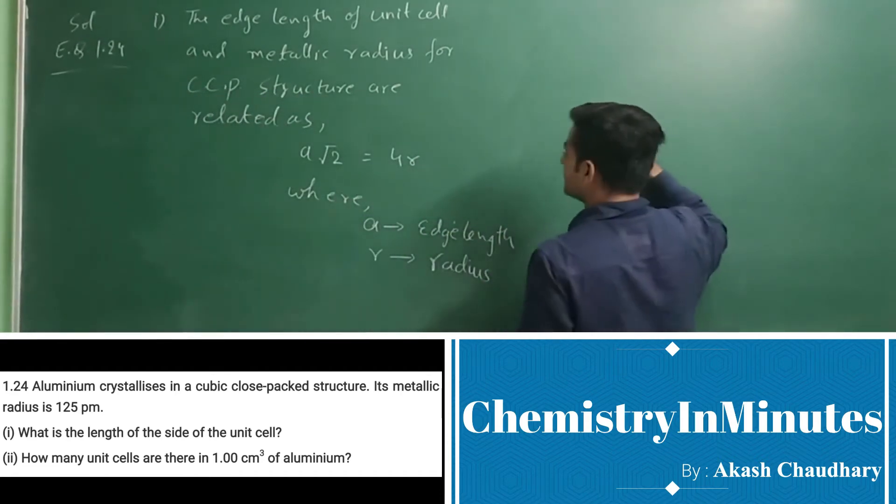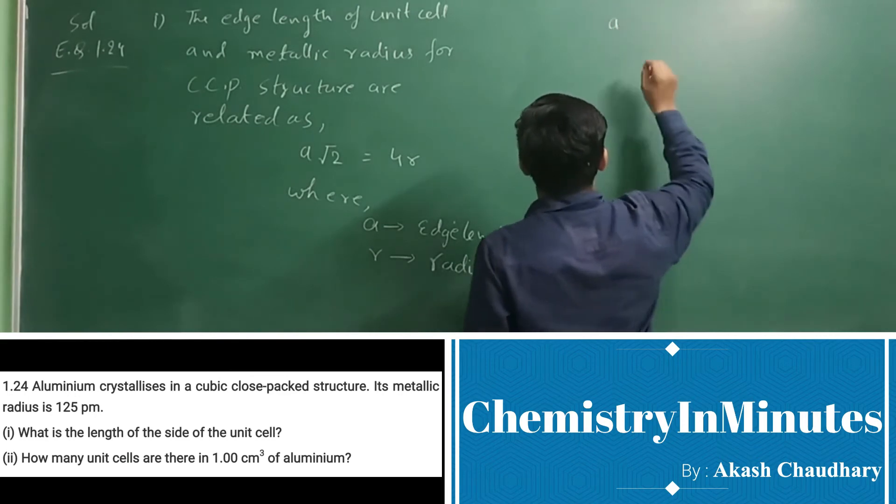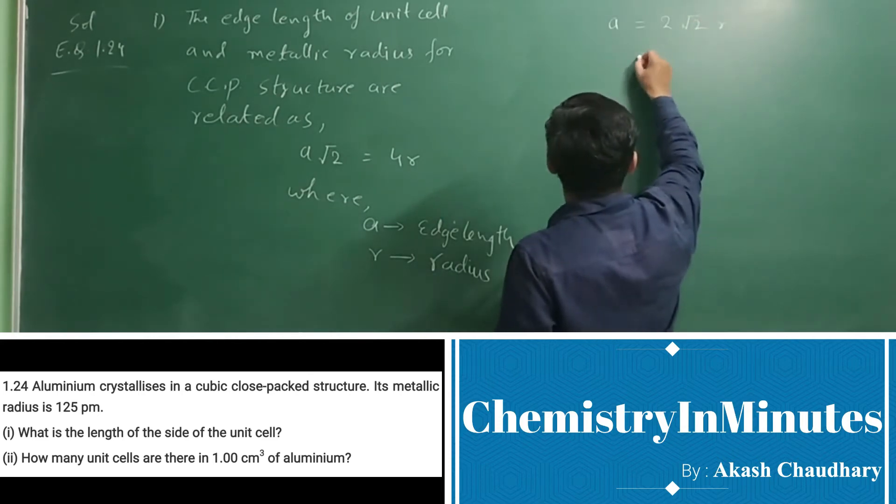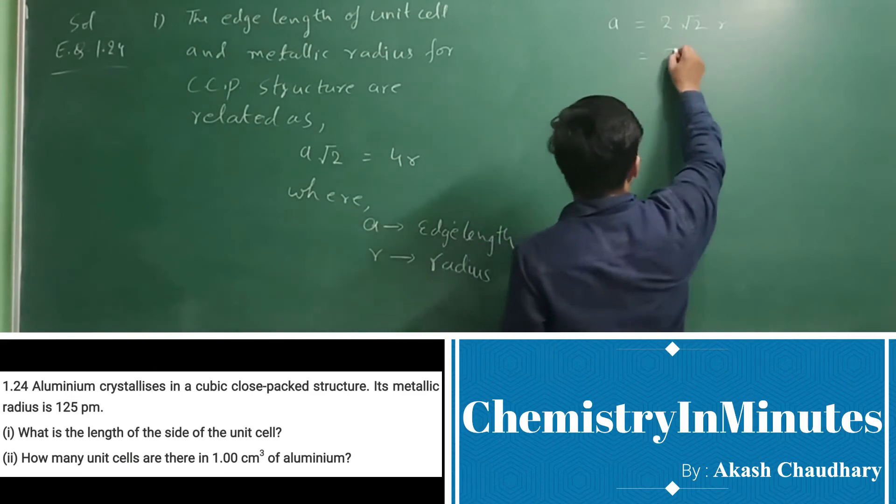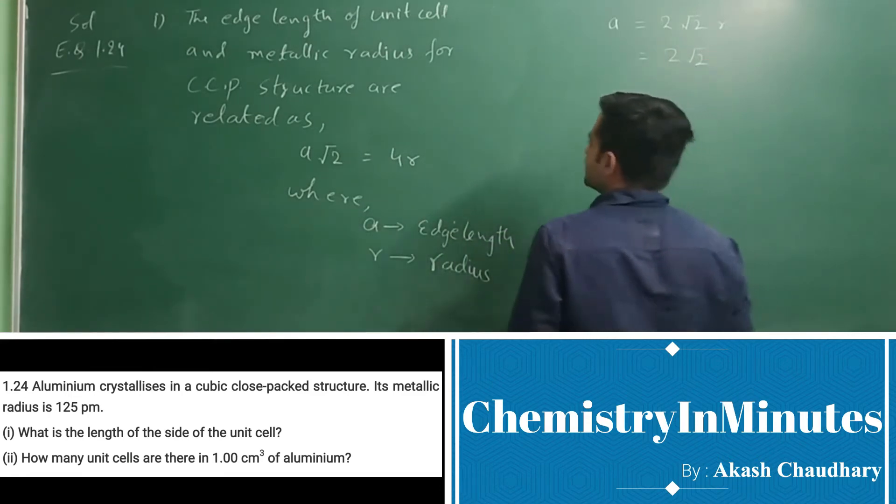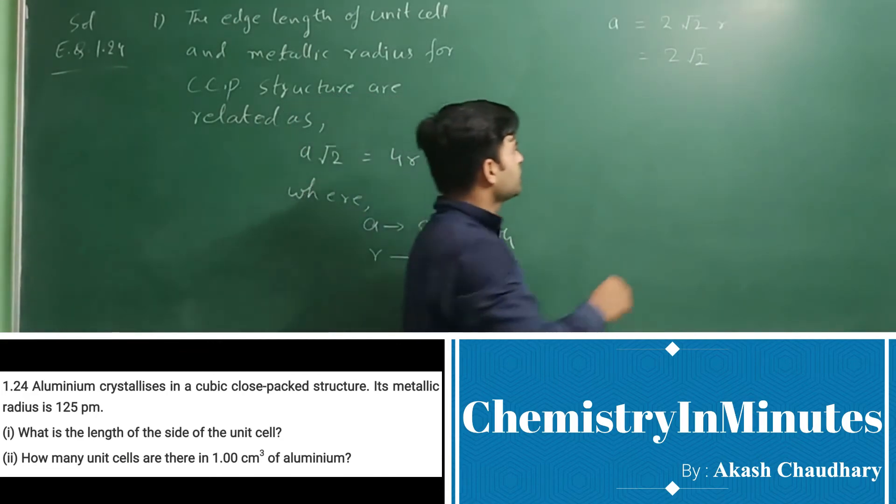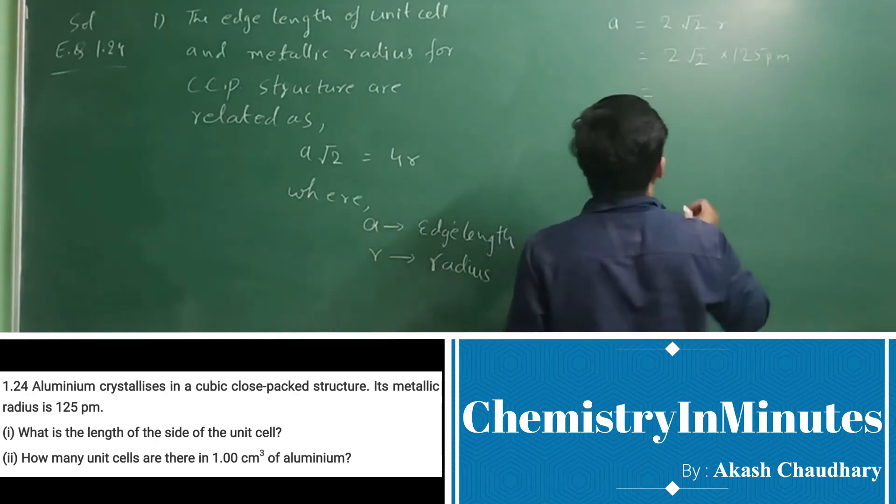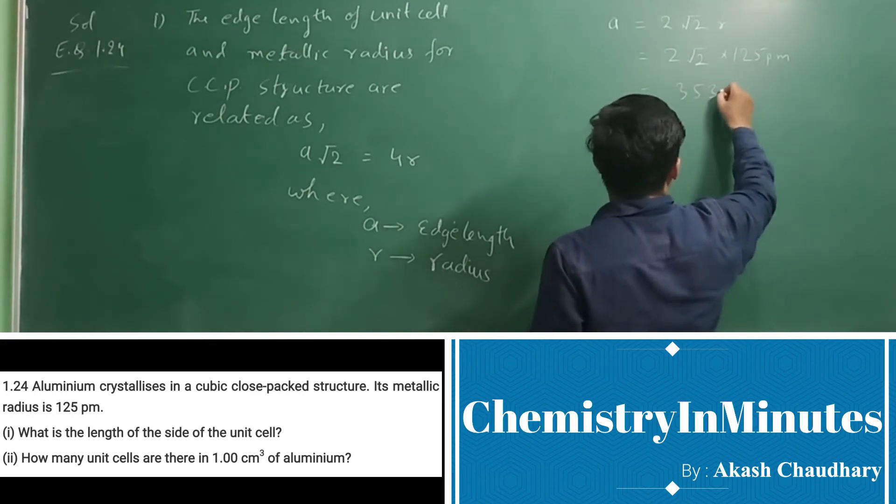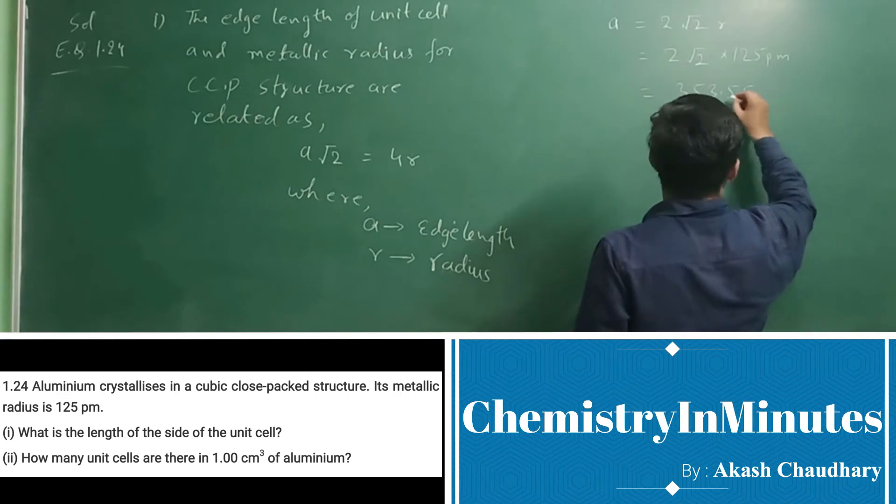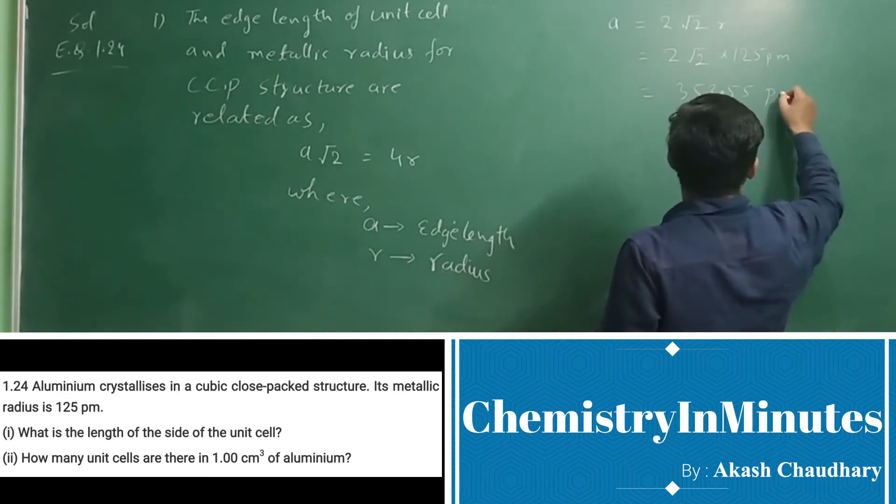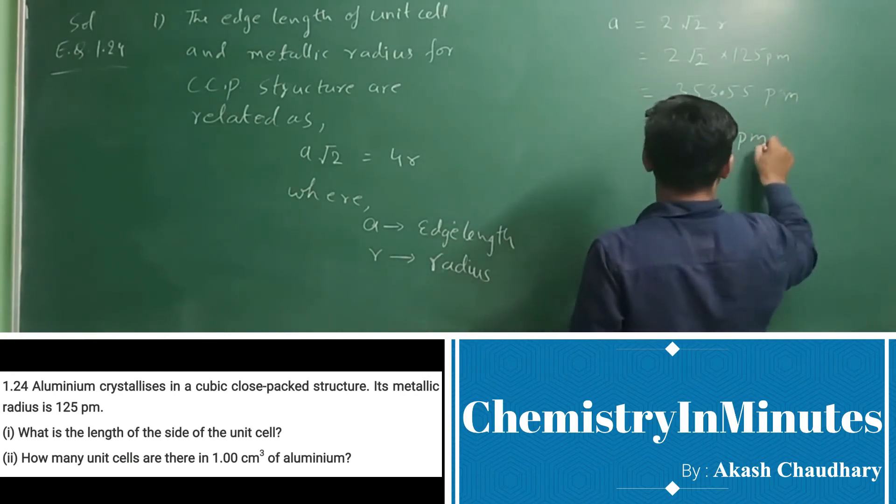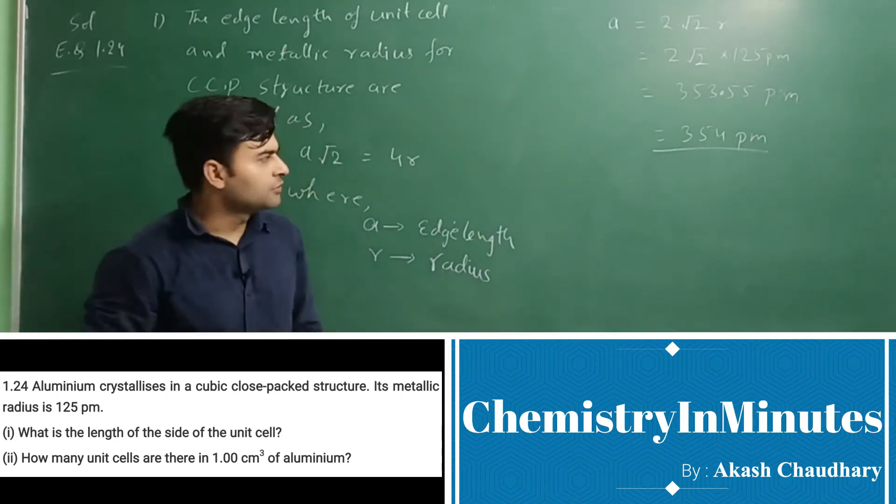So now using this relation, we can calculate a = 2√2 R. Now 2√2, this R is given to us in the question as 125 picometer. So this will come as 353.55 picometer or we can write this as 354 picometer. So this will be the answer to first part.